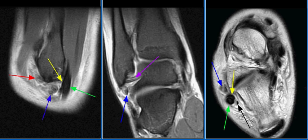The MRI examination shows tear of the calcaneofibular ligament near its proximal attachment. The torn tendon is thickened and hyperintense, as seen on this image with the blue arrow, anterior to the peroneus brevis and peroneus longus. An incidental note is made of peroneus quartus tendon, as seen on this image with the black arrow.